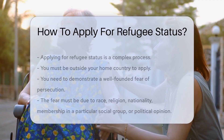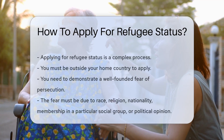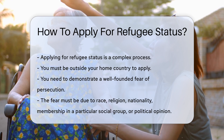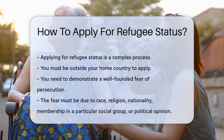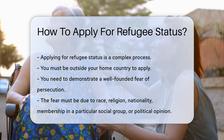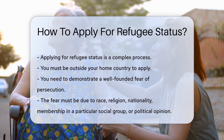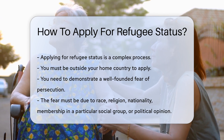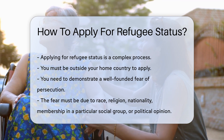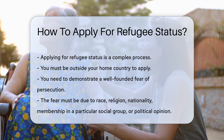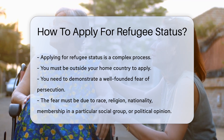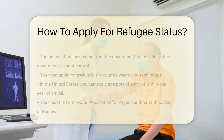Applying for refugee status is a complex process. It is crucial to understand the steps involved. First, you must be outside your home country. You need to demonstrate a well-founded fear of persecution. This fear must be due to race, religion, nationality, membership in a particular social group, or political opinion. The persecution must come from the government or individuals the government cannot control.